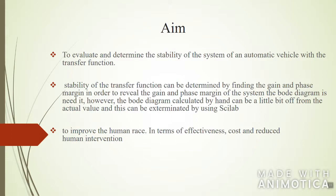Stability of the transfer function can be determined by finding the gain and phase margin. In order to reveal the gain and phase margin of the system, the Bode diagram is needed. However, the Bode diagram calculated by hand can be a little bit off from the actual value, and this can be eliminated by using Scilab to improve efficiency and reduce human intervention.